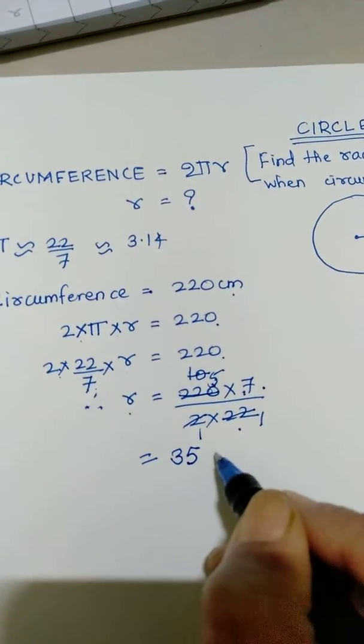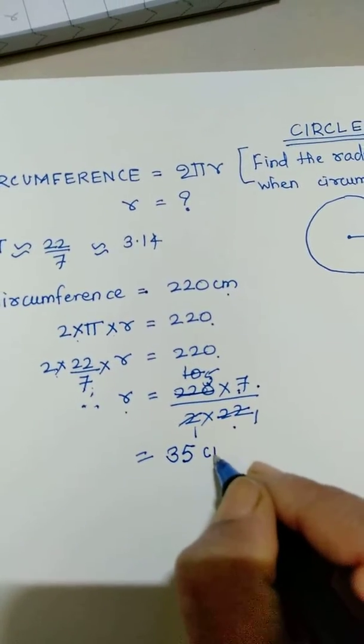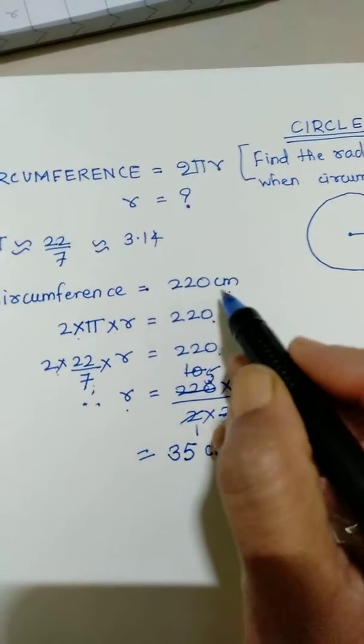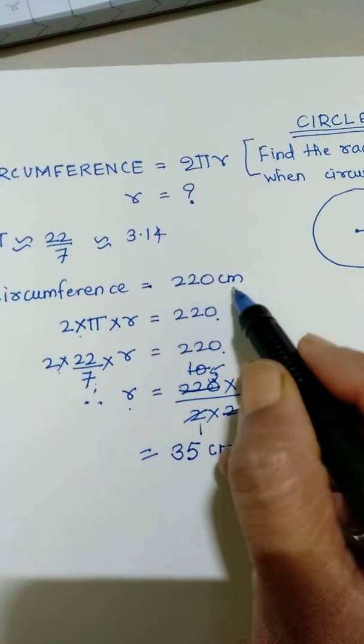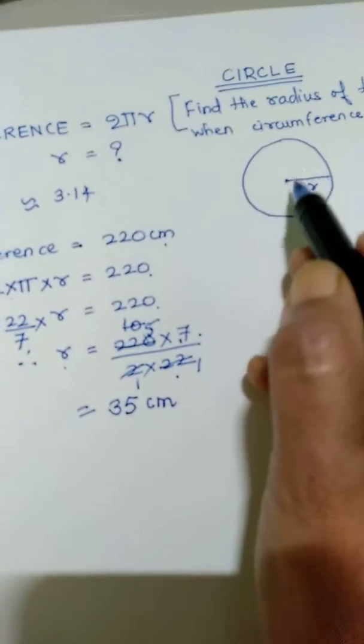So we just multiply 5 into 7 which gives out to be 35. Now what is the unit of radius? It is just the unit of length, that is centimeter, because circumference is also the unit of length because it is the distance.